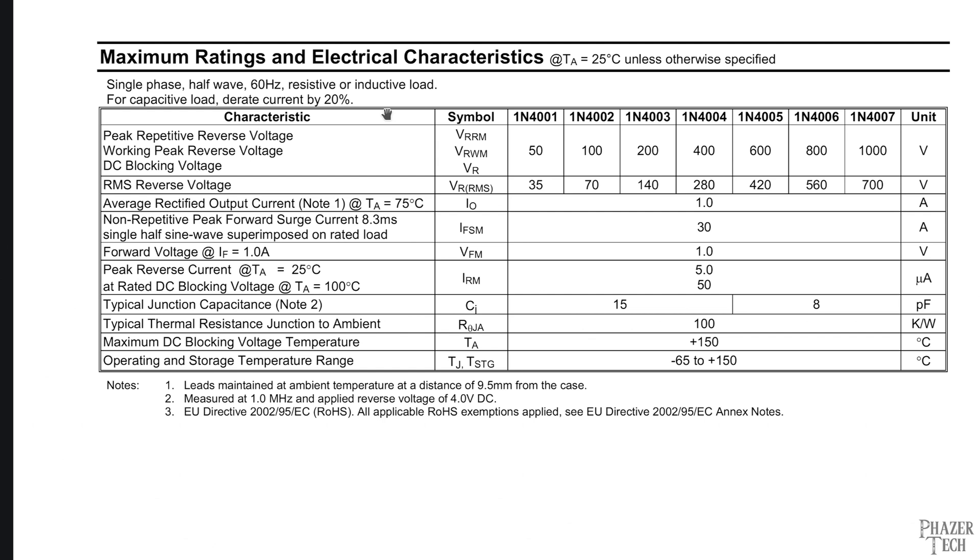Another important spec is the output current. These particular diodes are small in size and can only handle up to 1 amp. Running more current than this will likely lead to the diodes being damaged from overheating. The forward voltage is another important spec, as this tells you the minimum voltage required in order for the current to flow in the forward direction. These diodes require at least 1 volt in order for the current to start flowing.